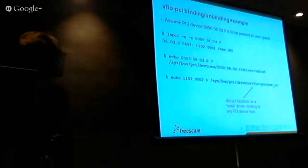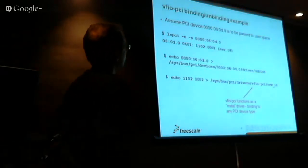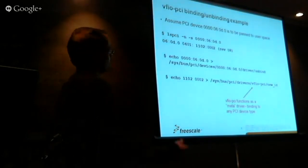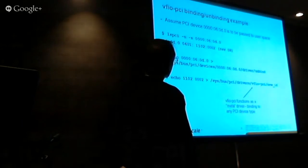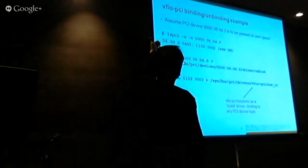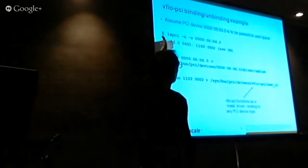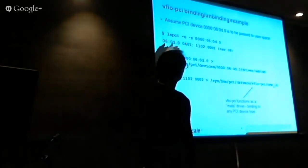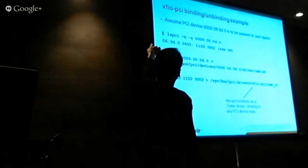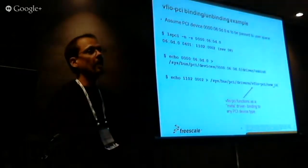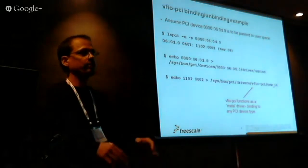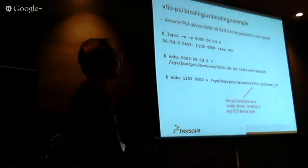Here's an example of how VFIO PCI works. If you want to pass through an E1000 card, the first thing you have to do is unbind the device from the host driver, so that the host will leave it alone and keep its hands off of it. You do that through SysFS by echoing the device to the unbind file for that driver.